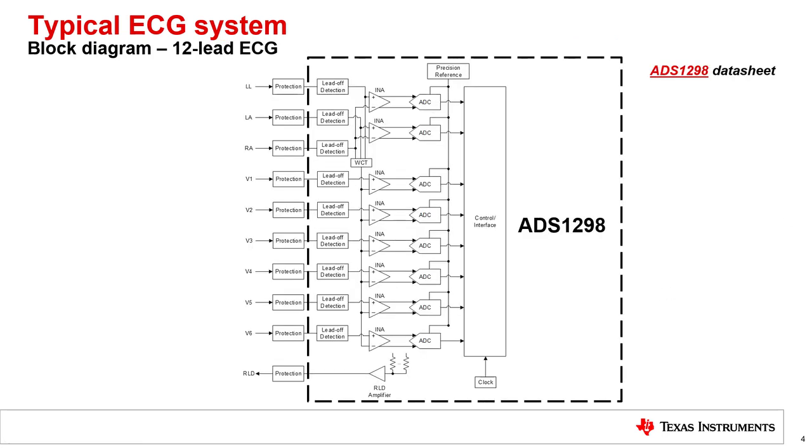We can even fit a higher number of leads into a single chip. Here we show a 12-lead ECG system, complete with WCT node and chest lead measurements, and we see that nearly the entire system can be integrated into a single chip like the ADS1298.